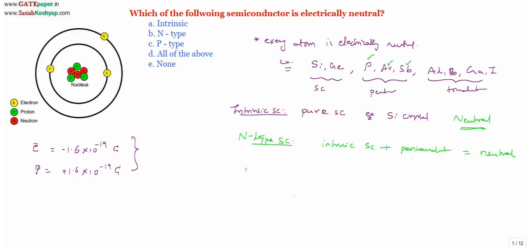P-type semiconductor is formed when a trivalent impurity is added to an intrinsic semiconductor. The intrinsic semiconductor is already neutral. Trivalent impurities — aluminum, boron, gallium, indium — are all neutral in nature. So trivalent impurity is neutral, pure semiconductor is neutral, and neutral plus neutral is neutral.